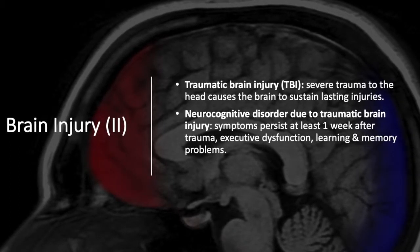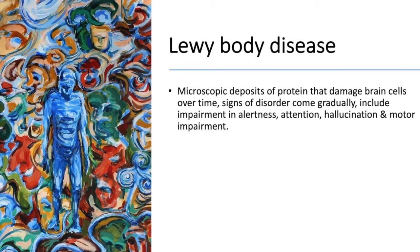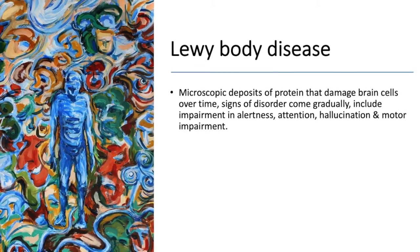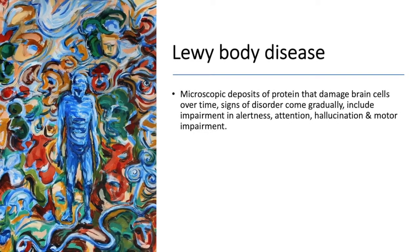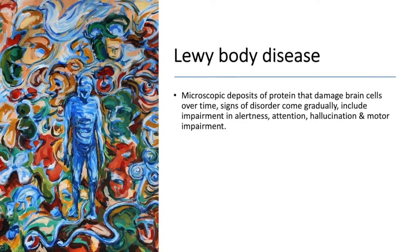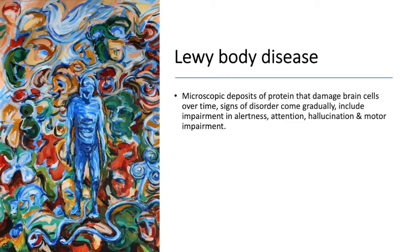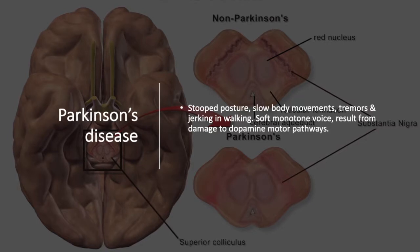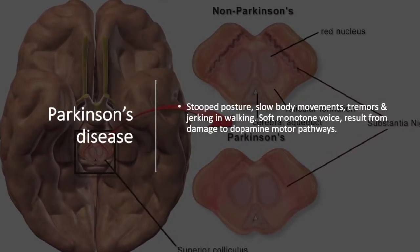Lewy body disease involves microscopic deposits of protein that damage brain cells over time. Signs of the disorder accumulate gradually and include impairment in alertness, attention, motor impairment, and hallucinations. Parkinson's disease is characterized by a stooped posture, slow body movements, tremors, and jerking when walking.